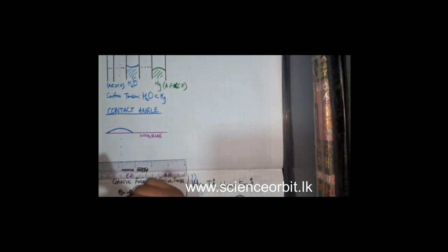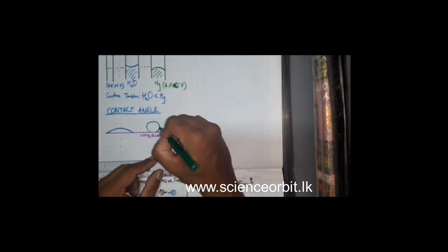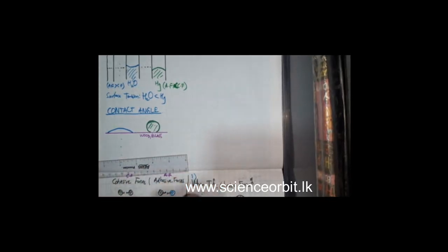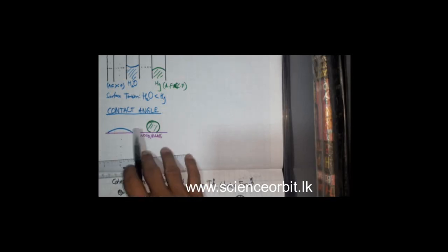The contact angle is the angle between the tangents of the solid surface and the liquid surface, measured inside the liquid. The purple line is the tangent of the solid surface, and at the point of contact, if I draw a tangent to the liquid surface, that gives us the two lines between which we measure the contact angle.